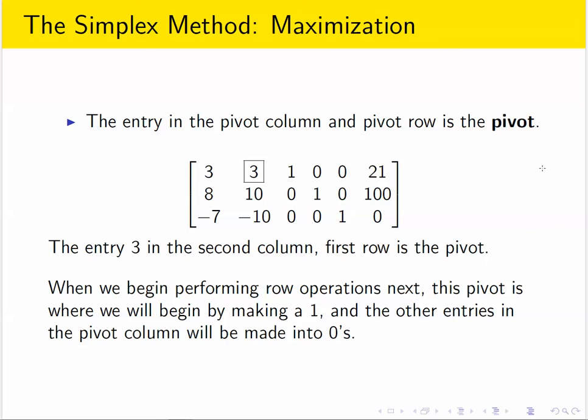So once you have the pivot, now we're going to start performing row operations. And our goal will be to change that pivot into the number 1, and to take all of the values below the pivot and make them into zeros. We'll do this by adding or subtracting multiples of the pivot row from the other rows. That will come in the next video.